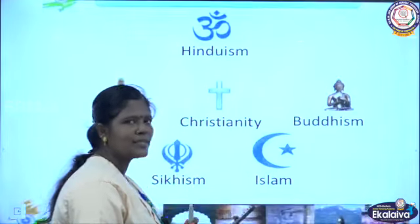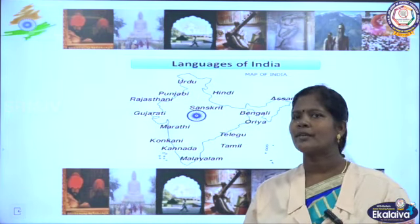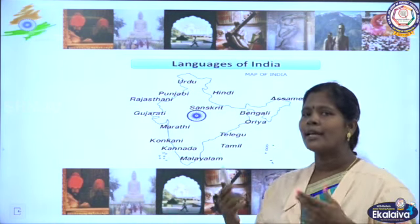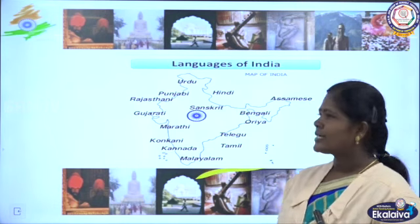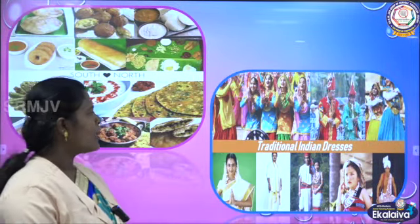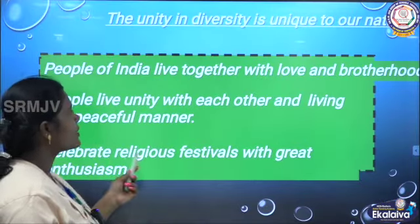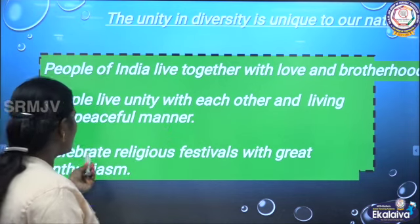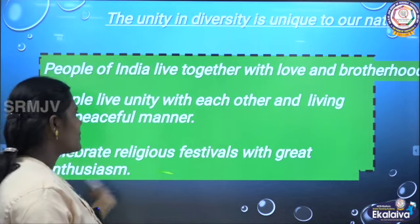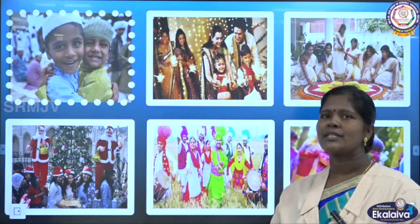In terms of language, a person in Kerala would speak Malayalam, a person in Punjab would speak Punjabi, and a person in Gujarat would speak Gujarati. You can see different languages depicting the diversity. Diversity is not only in terms of languages and religions, but also in terms of clothes, looks, or food. But still, people of India live together with love and brotherhood, celebrating religious festivals with great enthusiasm. That's why unity in diversity is unique to our nation.